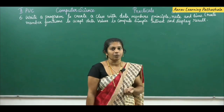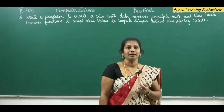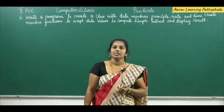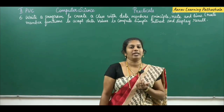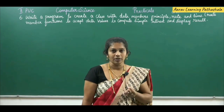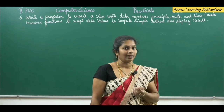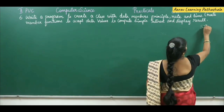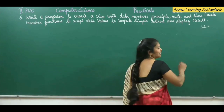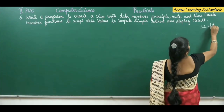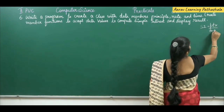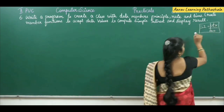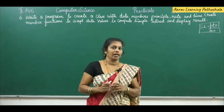What is the agenda of the program? You have to find the simple interest. To find simple interest, the variables we require are principal amount, rate of interest, and time. The formula to find simple interest is: Simple Interest = PTR divided by 100. This formula you already know. Now for this we have to write the program.